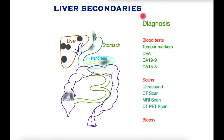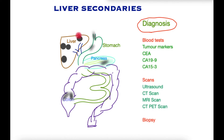How are liver metastases diagnosed? Liver metastases do not have specific symptoms as mentioned before. Sometimes pain in the right upper quadrant may lead to scans being performed.